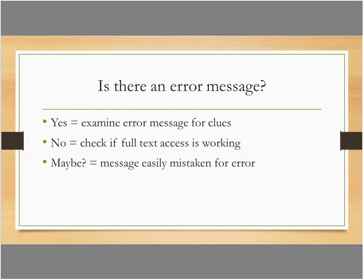The first question to ask is: is there an error message? A lot of times when you click on the link, you'll get some sort of message that blatantly tells you there is a problem. If there is an error message, you need to examine it for clues. But not all problems come with error messages. A common non-error example is our open URL landing page, which appears when a product does not play well with the open URL standard—the link resolver can get people to the journal but can't get them to the specific article. People often misunderstand this as an error when it's just how things work.